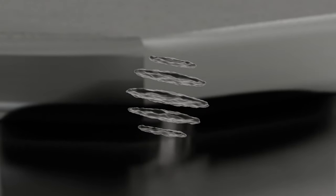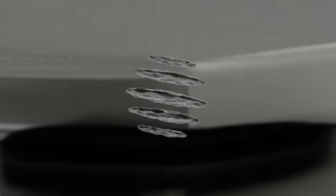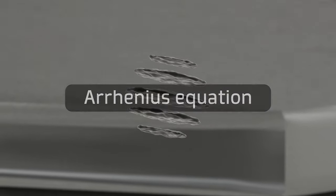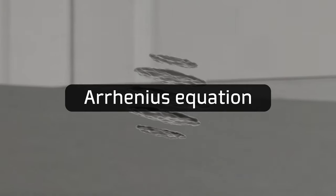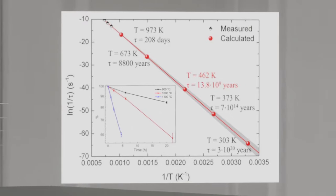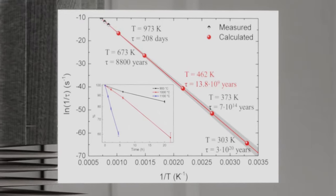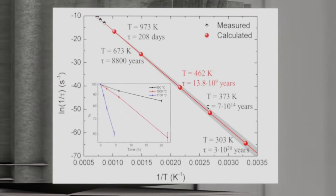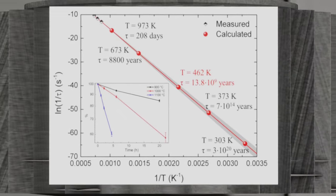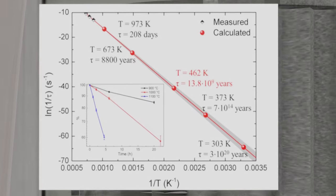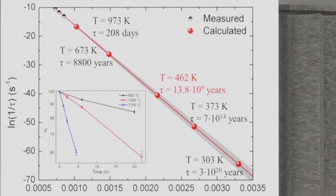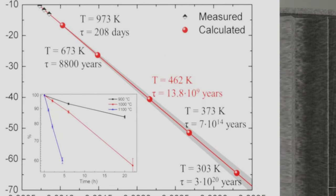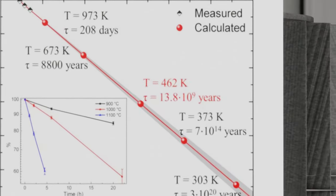Clearly this period cannot be checked empirically. However there are techniques such as the Arrhenius equation that allow us to link the rate at which a reaction occurs with its current temperature. In this case, several experiments were carried out at high temperatures to analyze the behavior of the reaction and thus project its speed at lower temperatures. Obtaining as a result that at 462 Kelvin or 189 degrees Celsius, the reaction would take 13.8 million years to occur, being comparable with the estimated age of the universe.